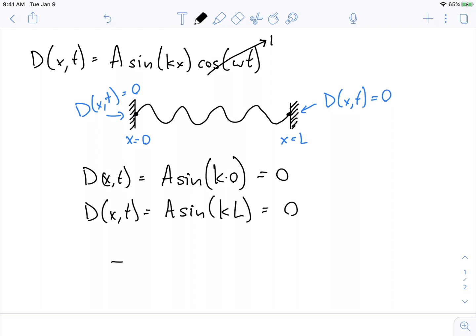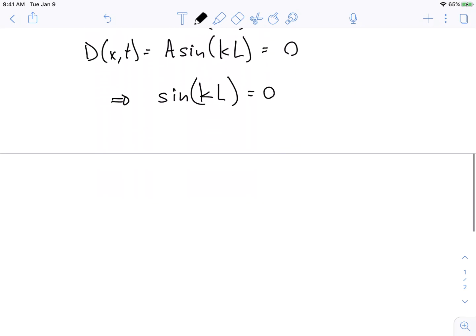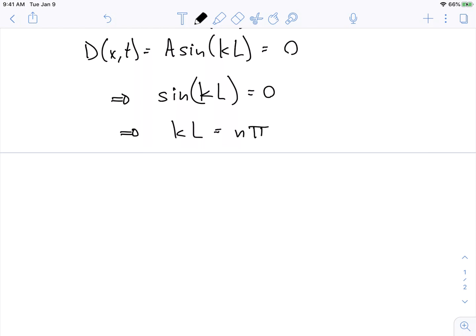The second equation is a little more interesting. The second equation says that sine of k times L is equal to zero. Let's take a closer look at this. Well, when is sine equals to zero? Well, sine is equal to zero when k times L is equal to some integer times pi. And is equal to one, two. It's true for zero too, but the zero case wasn't very interesting. So it's true for all these.